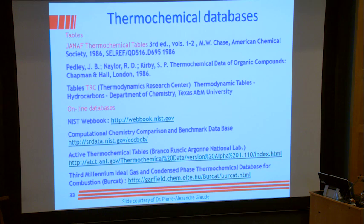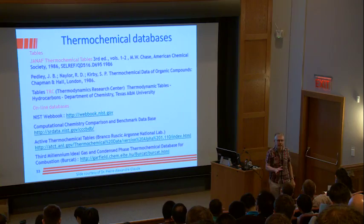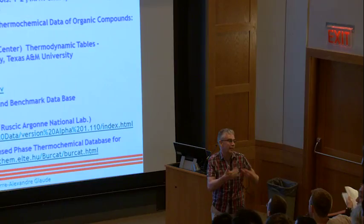That's the end of the thermochemistry presentation. These NASA polynomials — if you go to any mechanism website, whether Galway, Livermore, Hai Wang's group at Stanford, USC, or Professor Williams' group at San Diego — all mechanisms provide tables of thermodynamic data for all relevant species, all with this NASA polynomial expression: a 14-parameter fit to the thermochemistry.